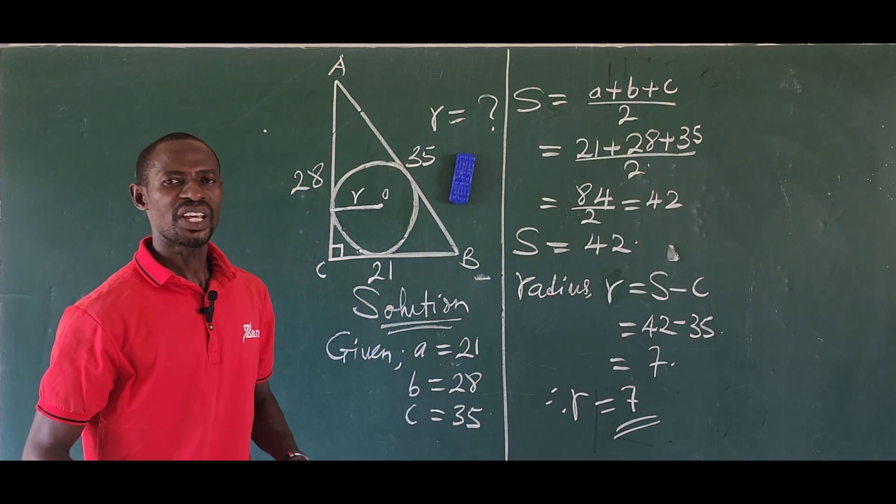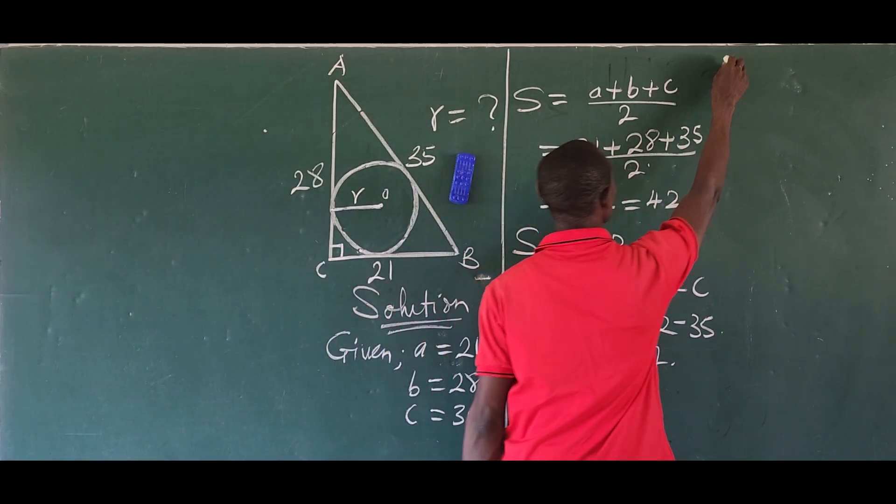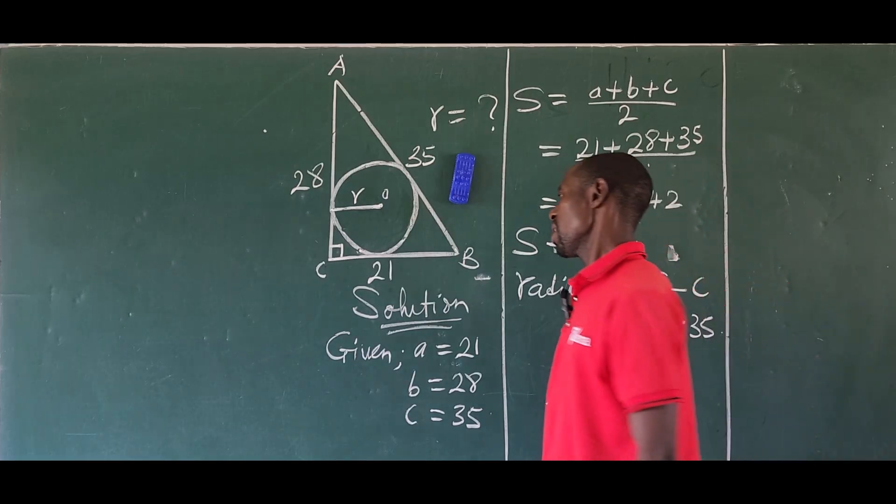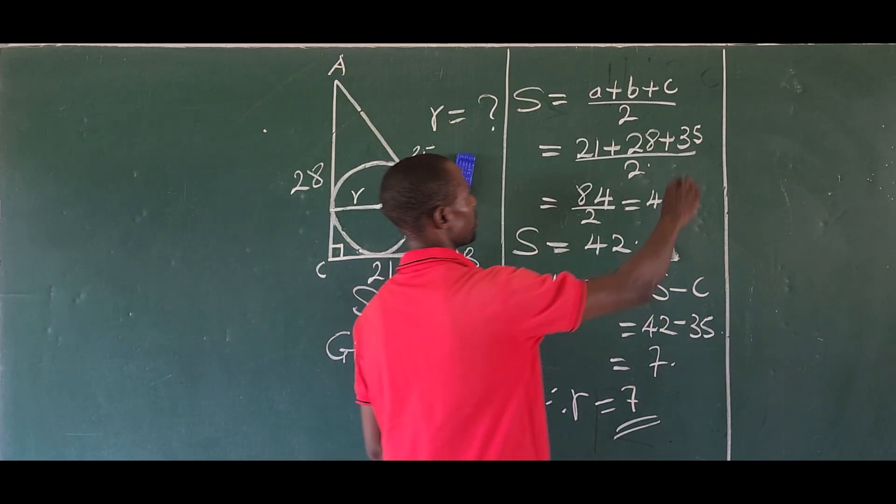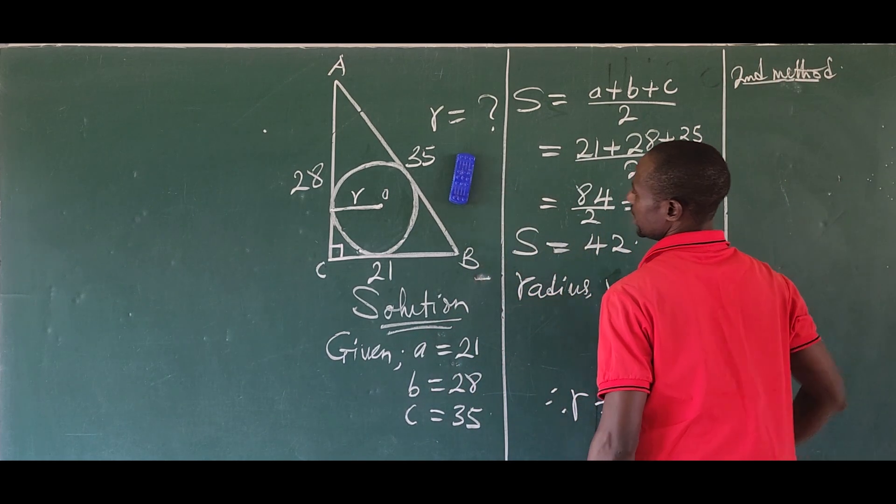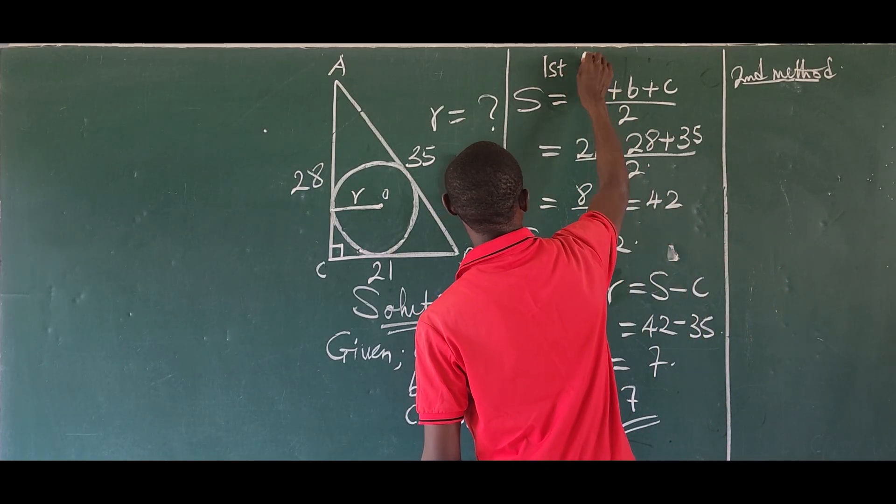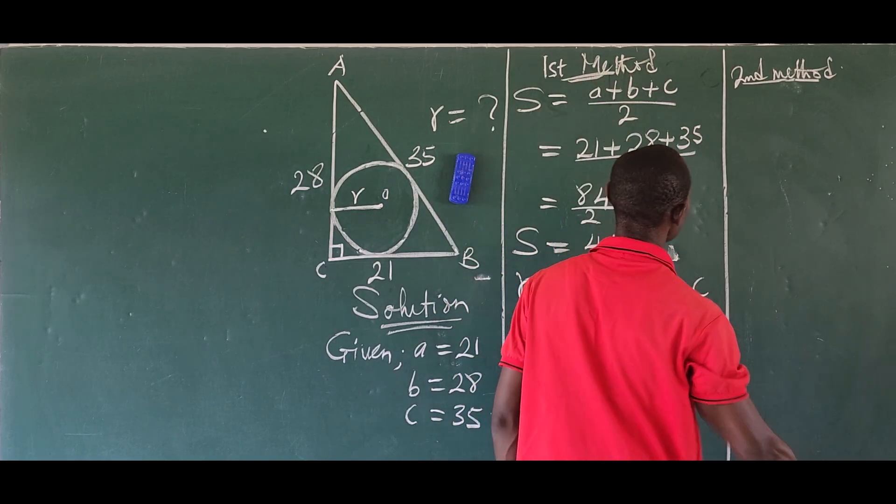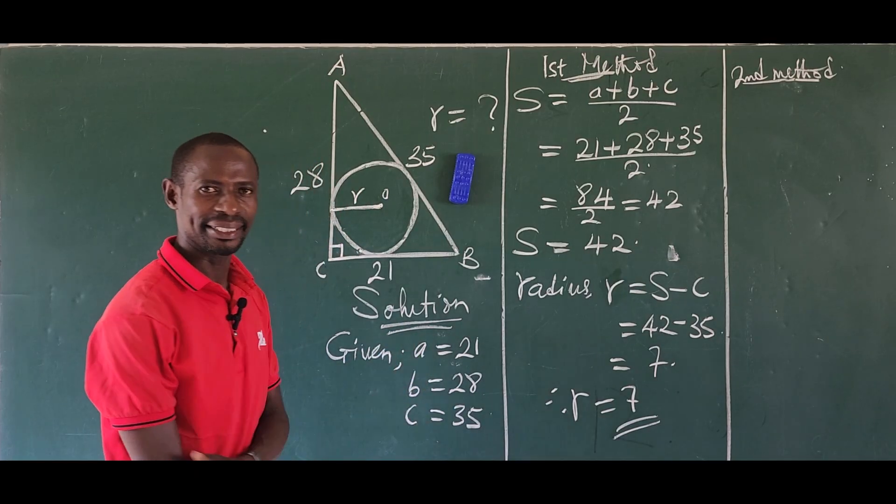Now, the second method for calculating the radius of this inscribed circle. We have our ABC. Let's take the second method. Again, we're going to go back to these values, not going to consider the semi-perimeter.